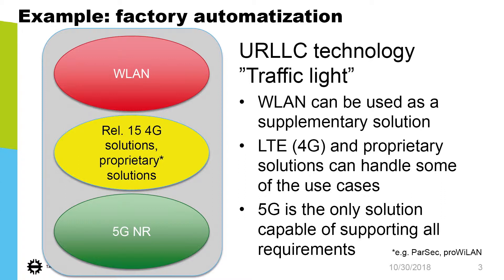I have made a simple traffic light example for factory automation, looking at different technologies that can be used to build a highly reliable, low latency network. I wouldn't rely on WLAN for low latency or high reliability traffic. LTE or proprietary solutions can solve some requirements but not all. The 5G radio interface combined with the 5G core is the only solution that can handle all the requirements — in my opinion, there is no competition.